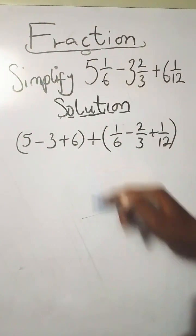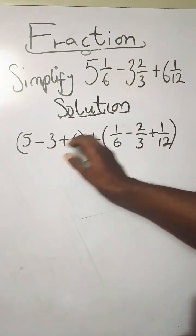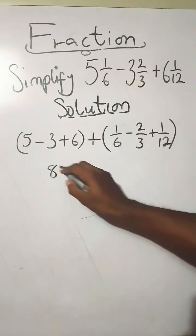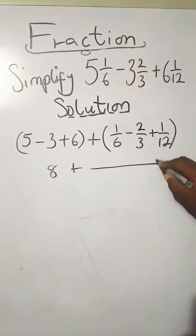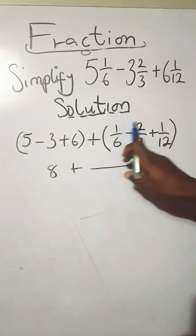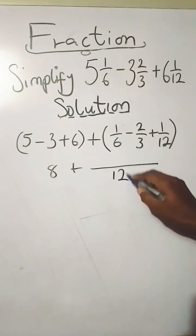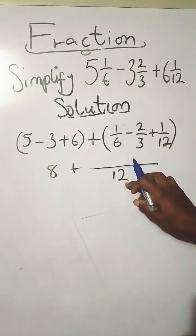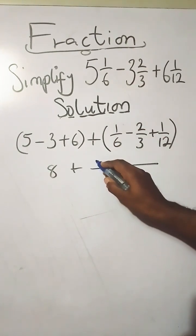Now go ahead to sort them out. 5 minus 3 is 2, plus 6 you have 8. Now the LCM of 6, 3, and 12 is 12. Then 6 goes into 12 twice, and 2 times 1 you have 2.